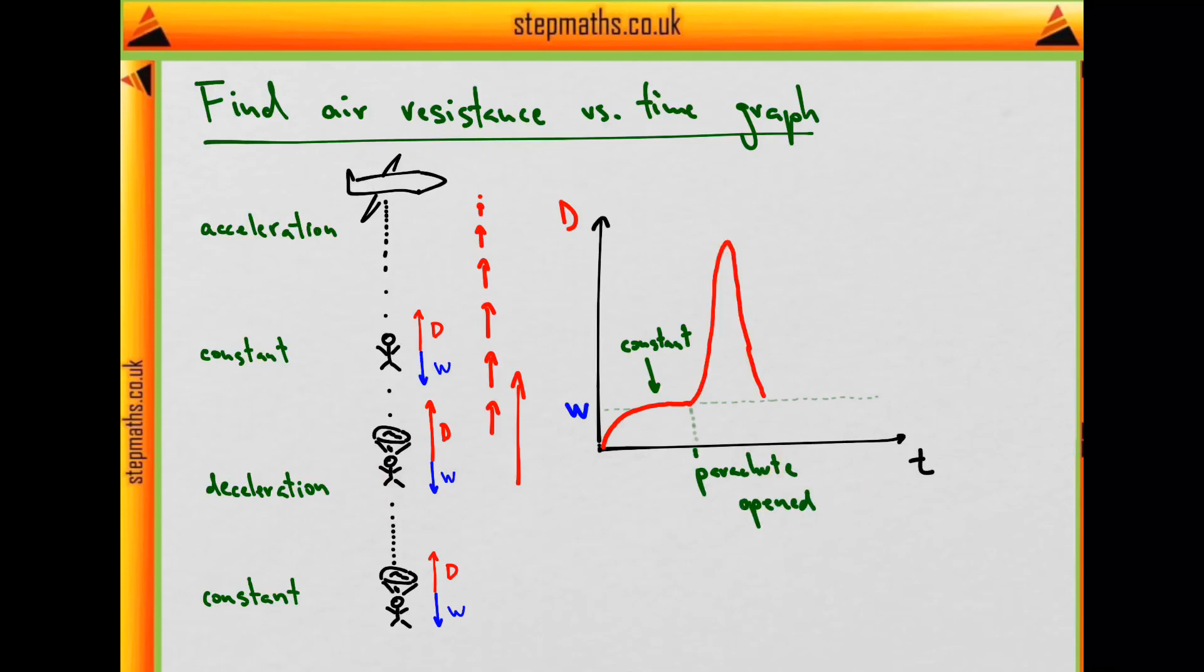So when the parachute is opened we get a spike, and now he's slowing down again to constant speed where the drag force will be equal to the weight and now constant throughout. So we can see that it's constant and it's equal to the weight.